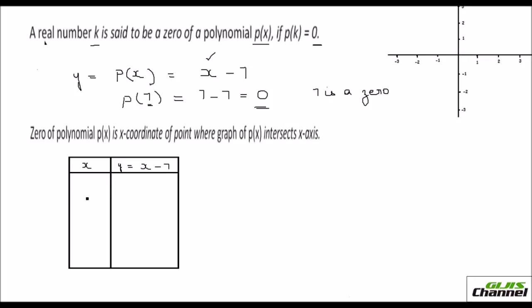Taking the same example, y equals x minus 7. I can give any values for x. If I take x as zero, my y would be zero minus 7, so that is negative 7. If I take it as 2, it would be 2 minus 7, that gives negative 5. The next value I took was 7: that is 7 minus 7, it gives me zero. So this 7 is the zero of the polynomial.